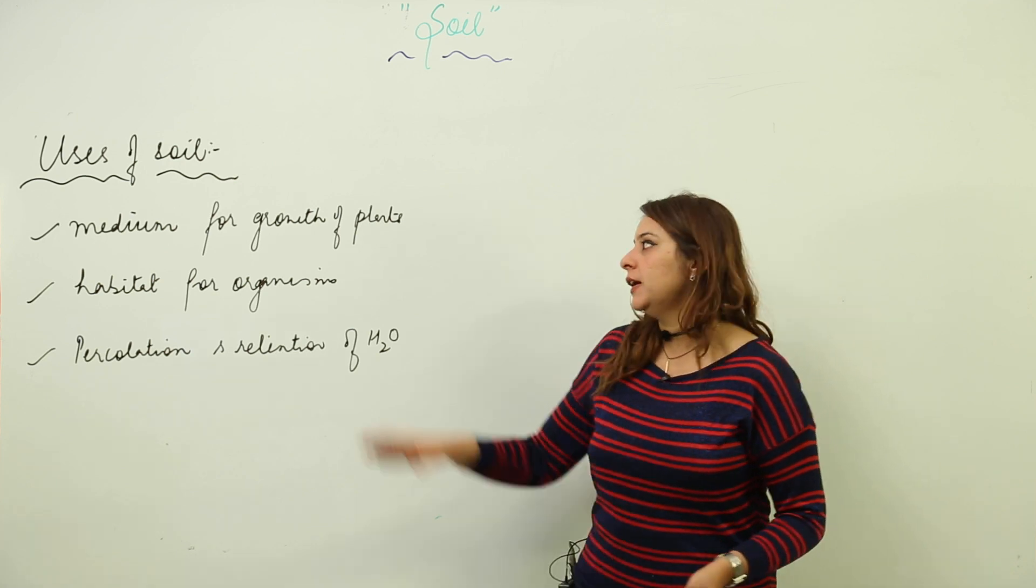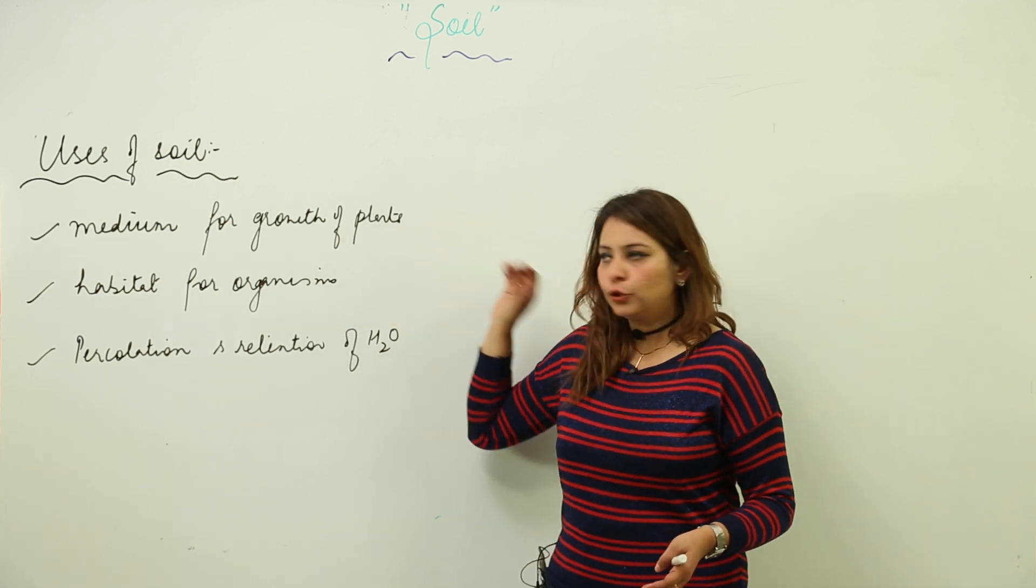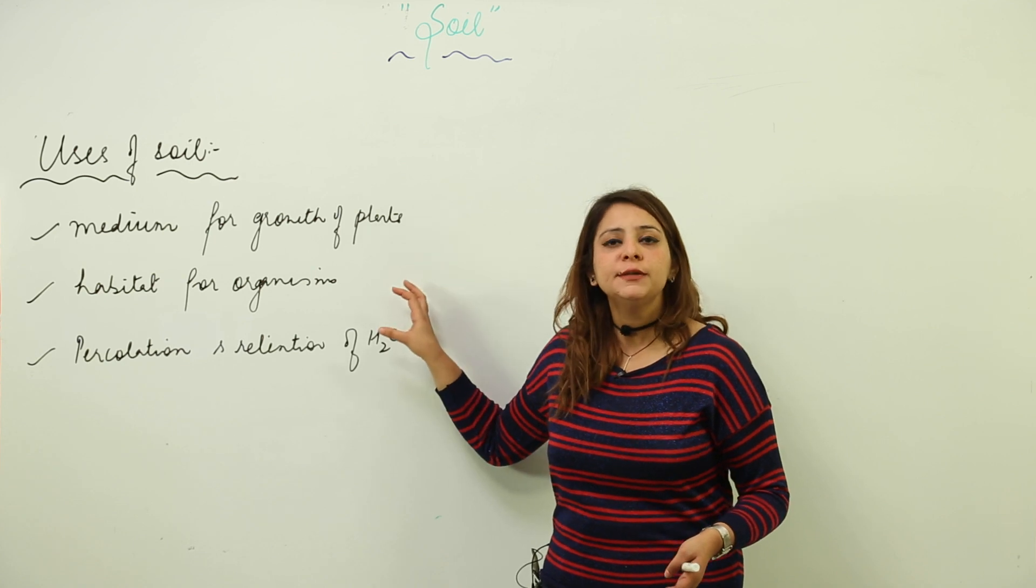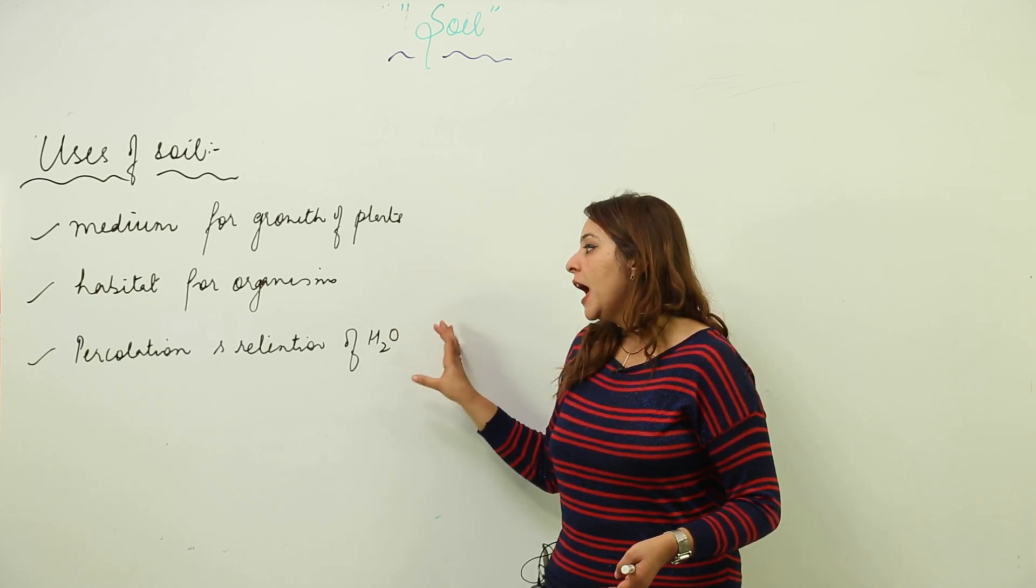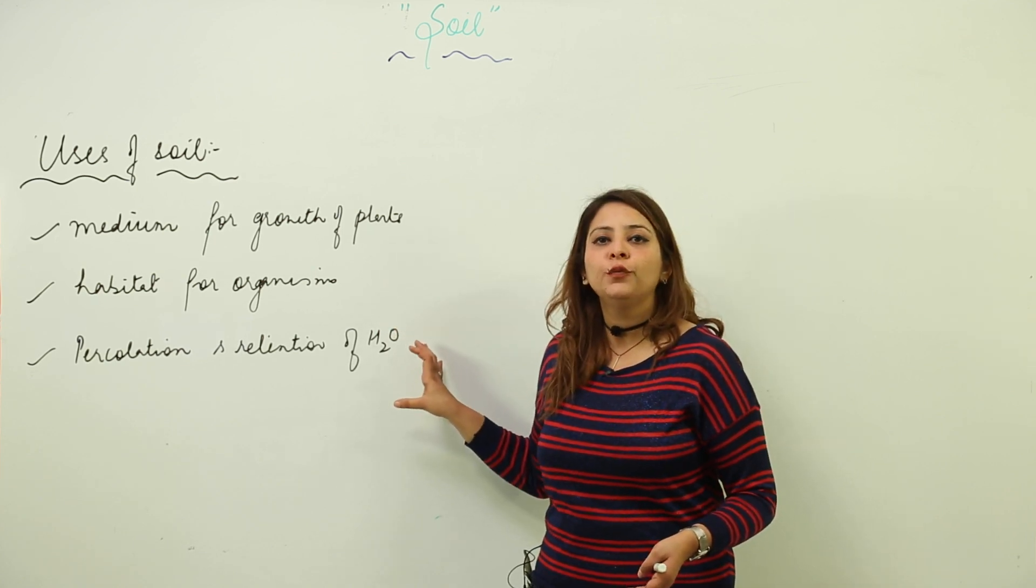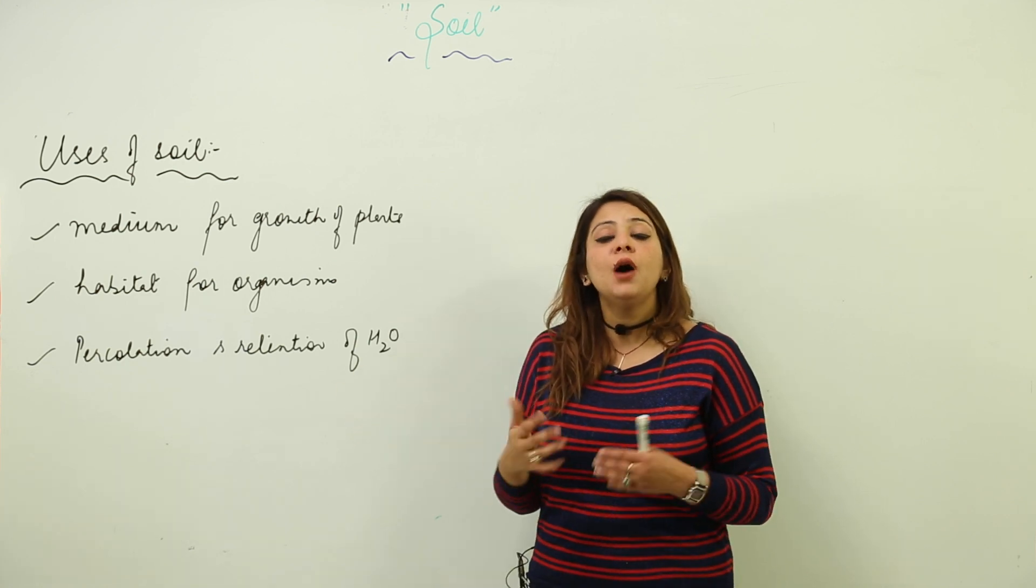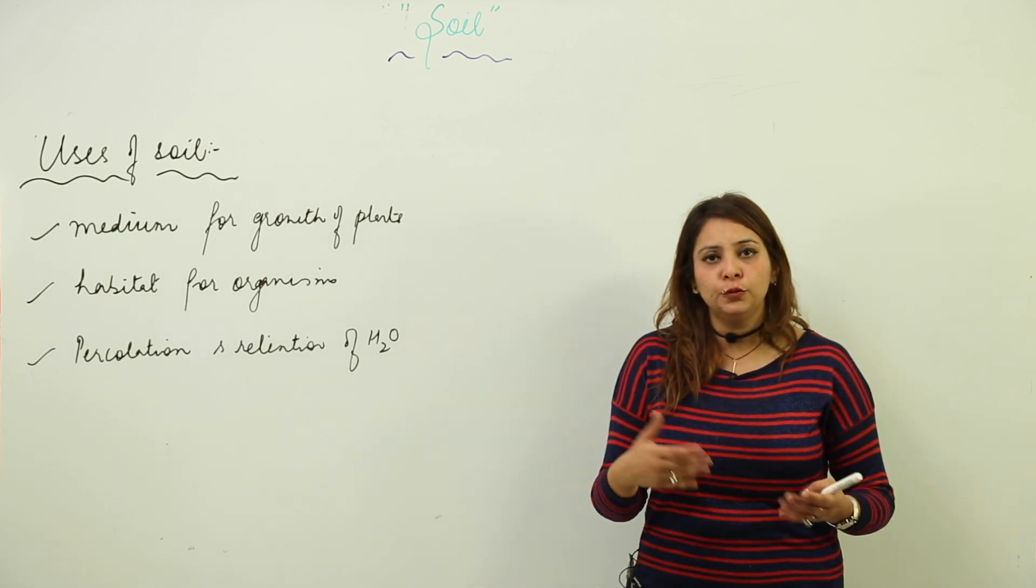You need to write these things under these main headings: why it is a medium for the growth of plants, what kind of organisms you get to see in soil, and how the percolation and retention of water works—what is responsible for that and how it is useful to plants.